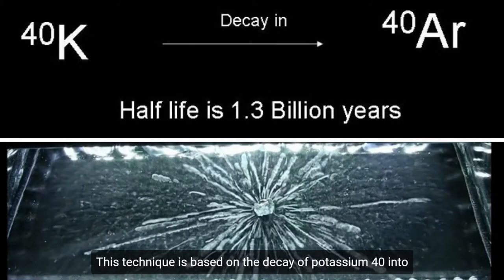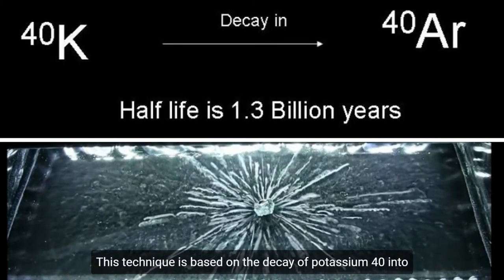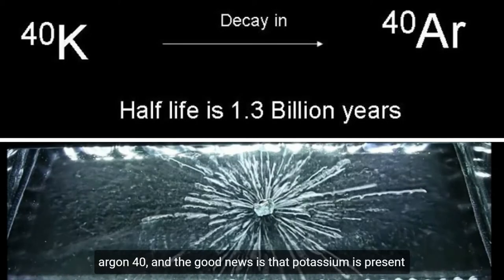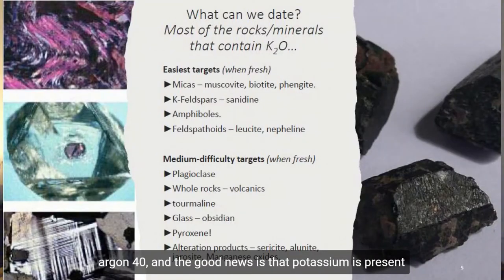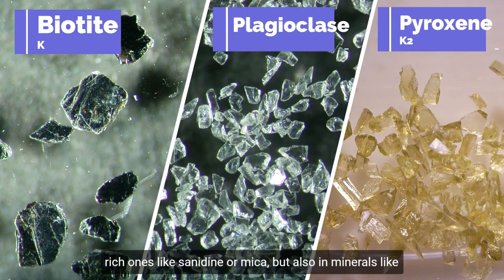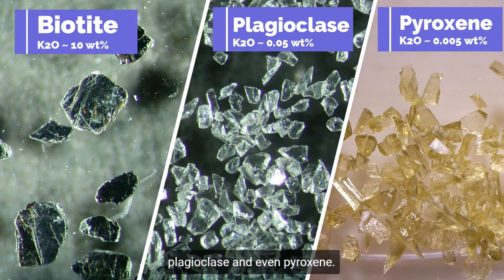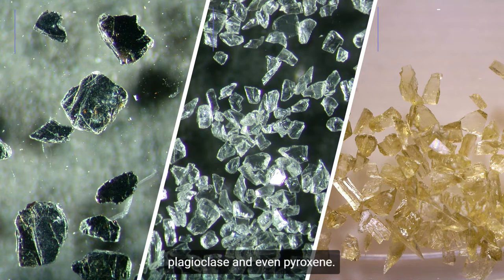This technique is based on the decay of potassium-40 into argon-40, and the good news is that potassium is present in pretty much every mineral — not only in obvious potassium-rich ones like sanidine or mica, but also in minerals like plagioclase and even pyroxene.